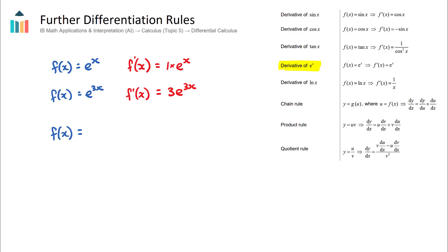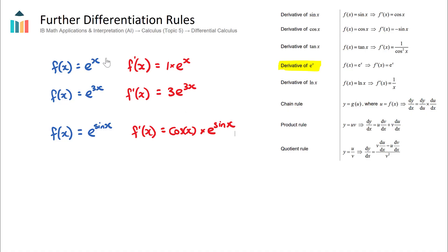Let's try f(x) = e^(sin x). The derivative of the power — which is sin x — is cos x, so cos x comes out the front and we write cos x multiplied by e^(sin x). This is how we take the derivative of exponential functions where we have e to the power of something.